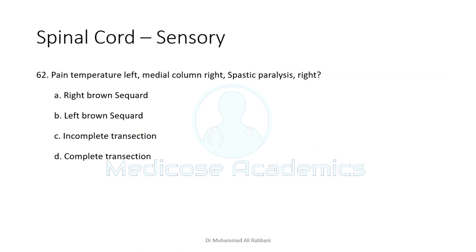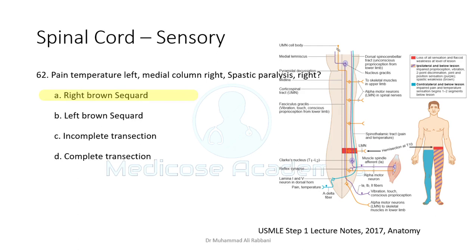In Brown-Séquard syndrome: if pain and temperature are lost on the left side and there is spastic paralysis on the right side, that is the classic presentation. There is ipsilateral spastic paralysis from corticospinal tract damage, ipsilateral loss of dorsal column features (two-point discrimination, proprioception) below the level of lesion, and contralateral loss of pain and temperature from anterolateral column damage — all below the level of lesion.